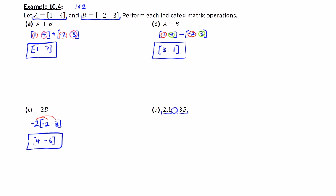Let's go ahead and write out what it looks like. So 2 times 1, 4 plus 3 times negative 2, 3. And we'll do the scalar products. That'll be 2, 8 for that first matrix.